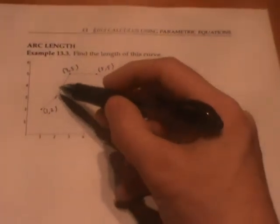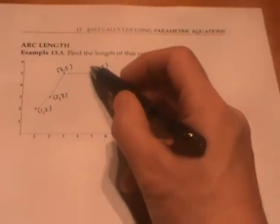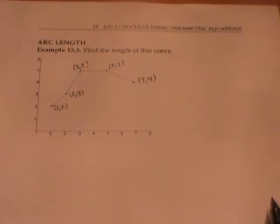I'm going to start with a simple example. Here my curve is made of straight line segments, so I don't need calculus to find the distance we would travel walking along that curve.